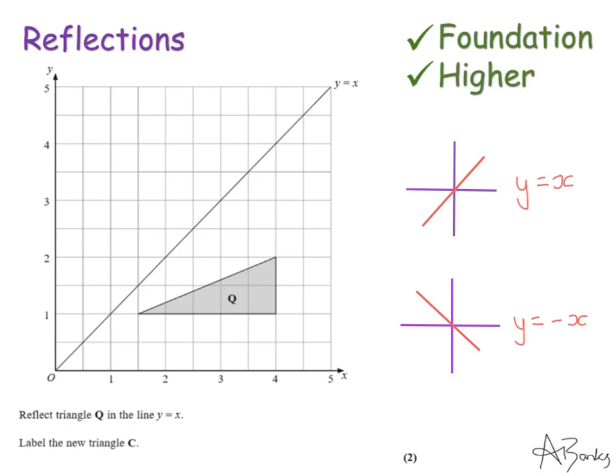So this is the line Y equals X, you can see that it goes through 0,0, 1,1, 2,2, 3,3, 4,4 and 5,5 because the Y coordinate and the X coordinate are always the same.